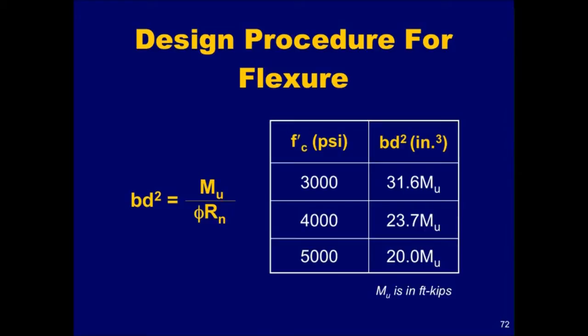Note that for one-way slabs, which are usually designed by using 1 foot wide design strips, this sizing equation can be simplified even further by dividing the constants in the second column of the table by 12. This results in an equation for the effective depth, d, of the slab.